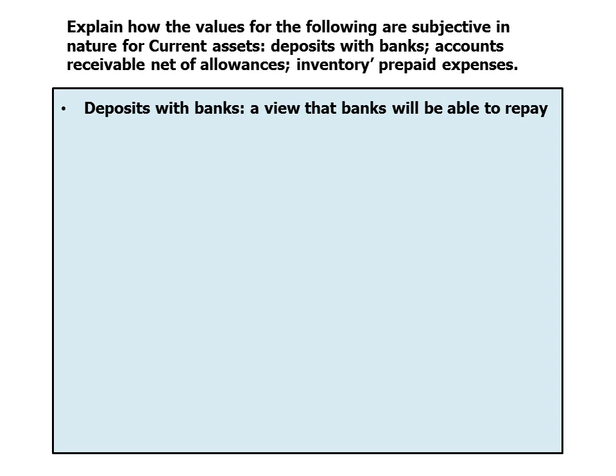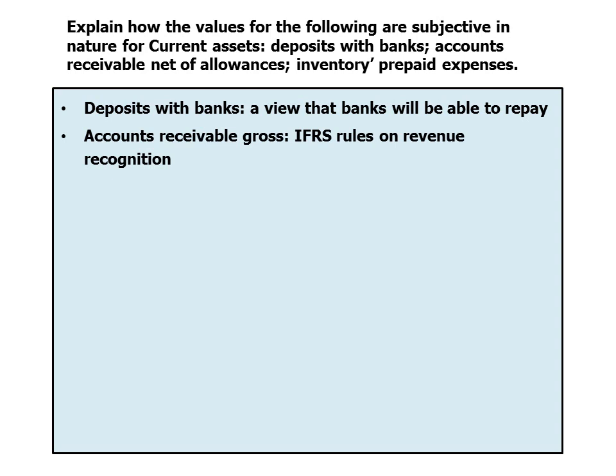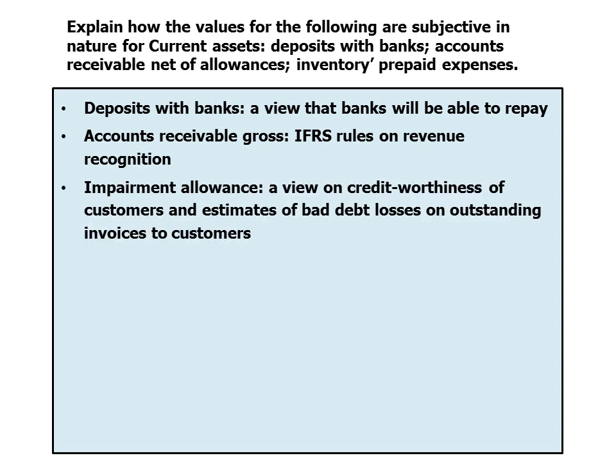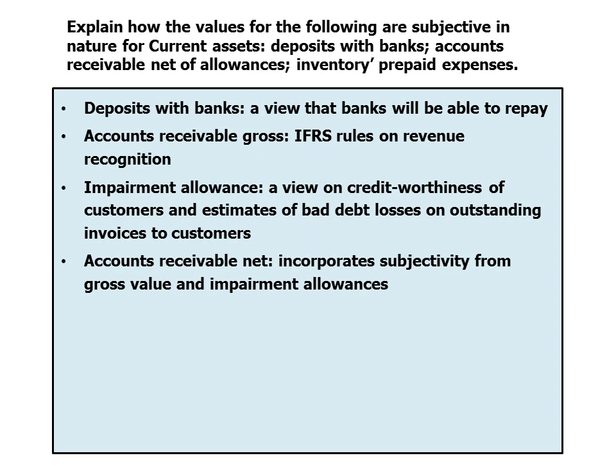For accounts receivable, the gross value is determined by revenue recognition rules, which determine when a company can take revenue through the income statement. The impairment allowance involves a view on the overall creditworthiness of customers, and for customers with an identified impairment event, estimates of bad debt losses on outstanding invoices are a management estimate. Accounts receivable net incorporates subjectivity from both the gross value and the impairment allowances.